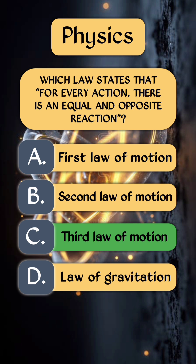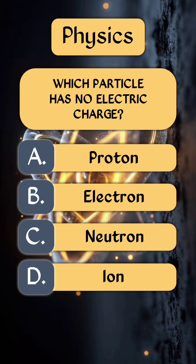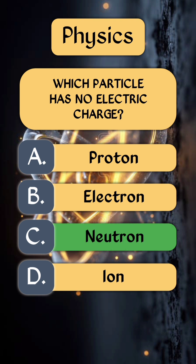Third law of motion. Question 3: which particle has no electric charge? The right answer is option C: neutron.